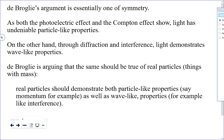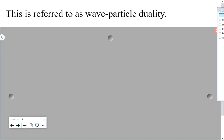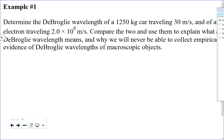Can real particles have momentum? Yes. If light particles can have momentum and behave like waves, then why can't real particles have momentum and behave like waves? This is called wave-particle duality. We're going to calculate the de Broglie wavelength of a 1250-kilogram car moving at 30 meters per second, and also of an electron traveling at 2 times 10 to the 6 meters per second, and then talk about what these numbers mean.